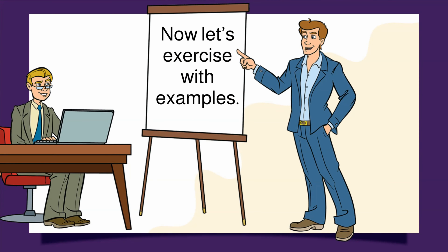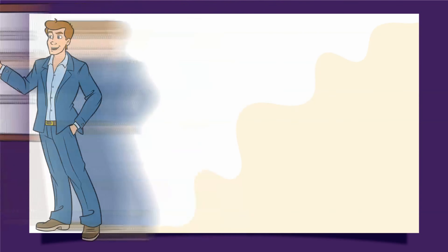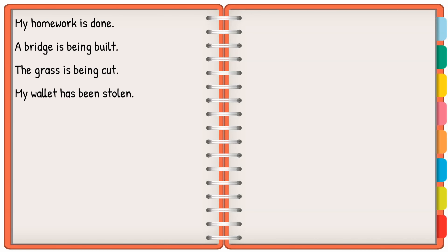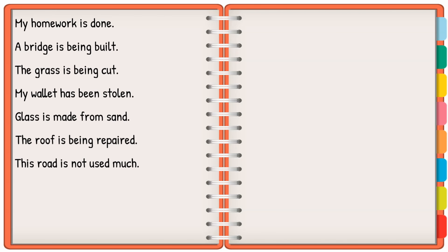Now let's exercise with examples. 'My homework is done.' 'A bridge is being built.' 'The grass is being cut.' 'My wallet has been stolen.' 'Glass is made from sand.' 'The roof is being repaired.' 'This road is not used much.' 'Paper is made from wood.' 'The car has been damaged.'